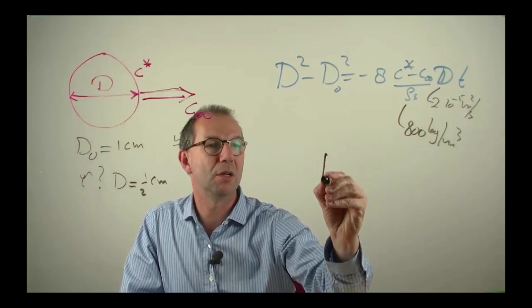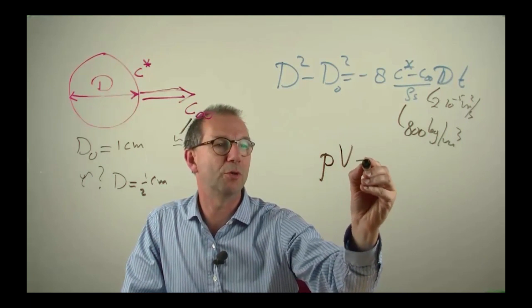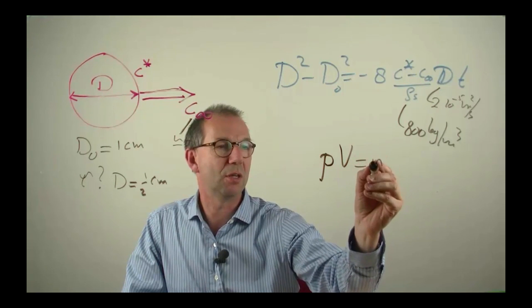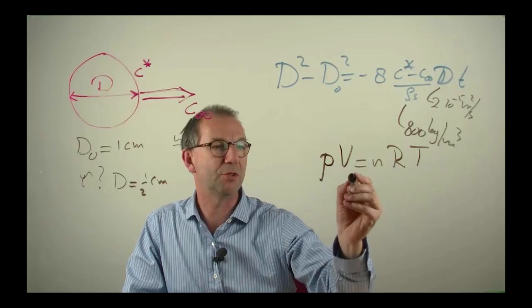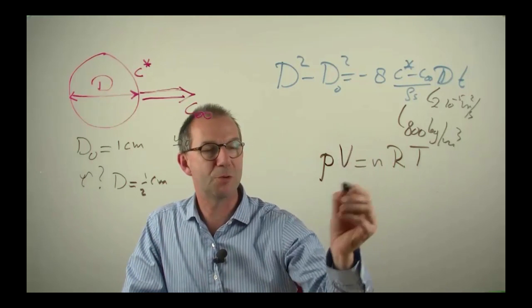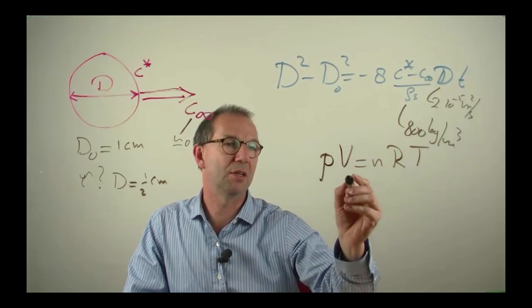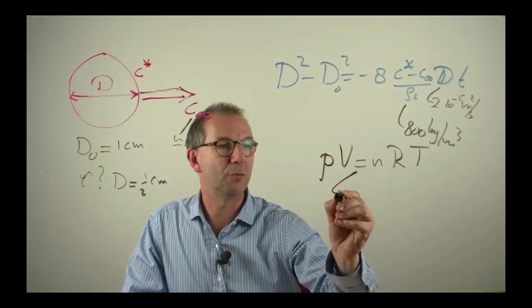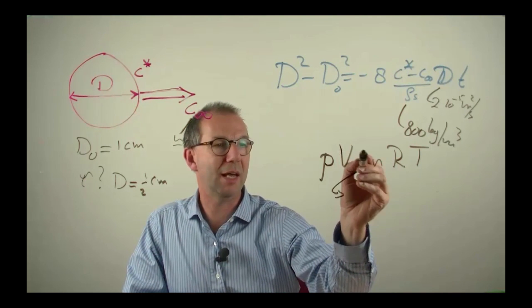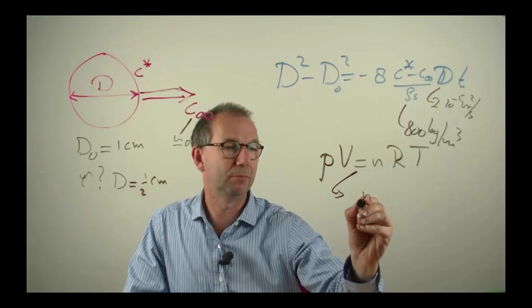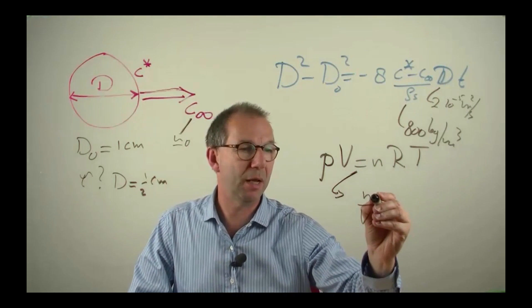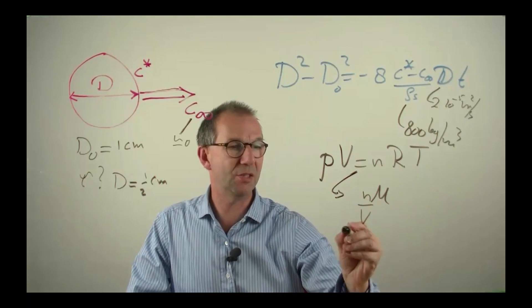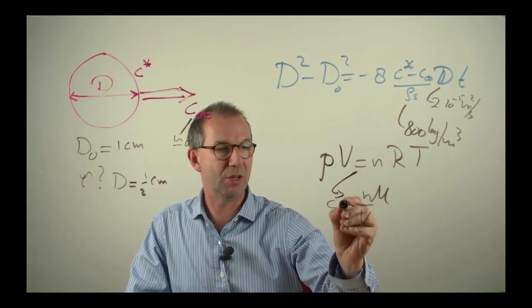Ideal gas law: pressure volume equals number of moles gas constant times the temperature. Here is where the concentration is hidden or can be backed out. Rather than writing N, I write N over V. That is the molar density. If I multiply that by the molar weight, I get the concentration I am looking for.